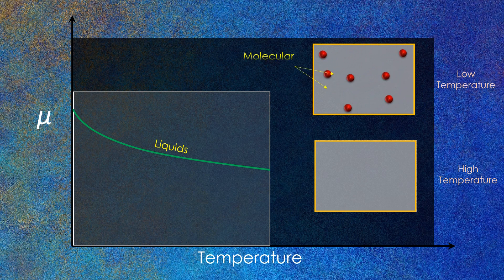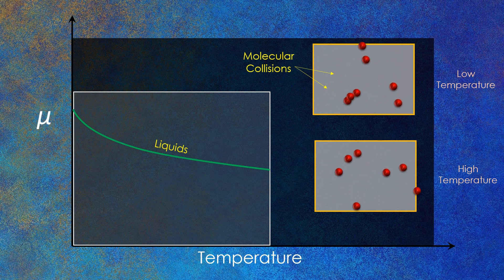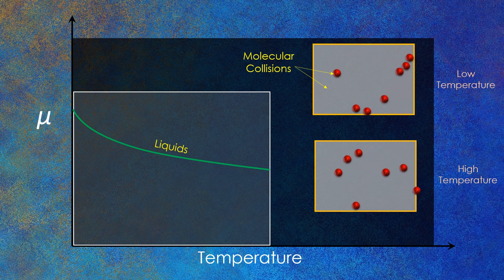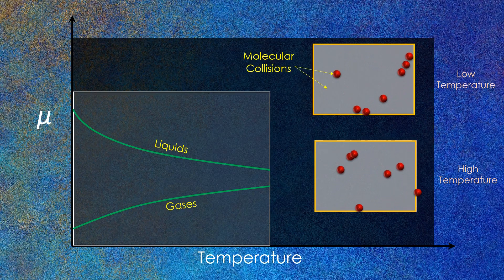As we know, the intermolecular forces in gases are negligible. So on increasing temperature, the gas molecules gain more energy and move randomly at higher velocities. This results in more molecular collisions per volume per unit time and therefore causes increase in the resistance to flow, thereby increasing the viscosity.